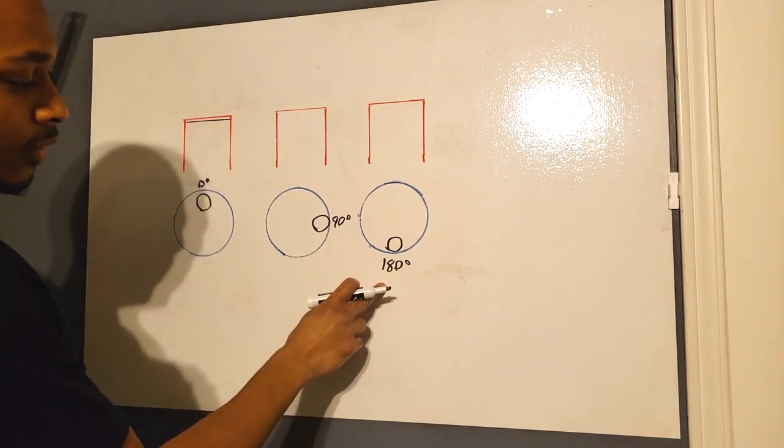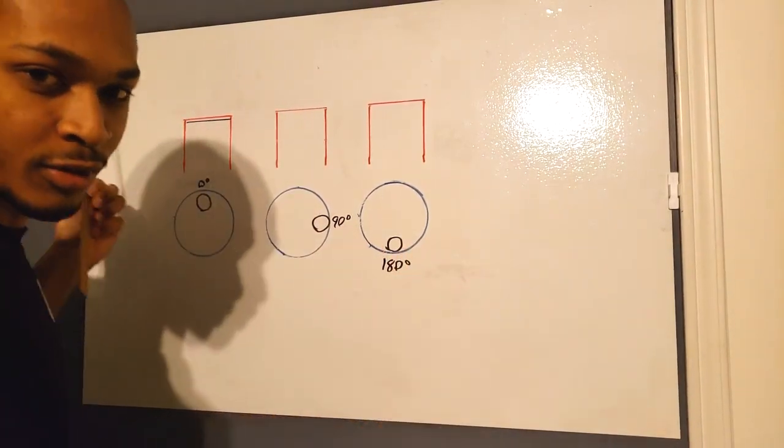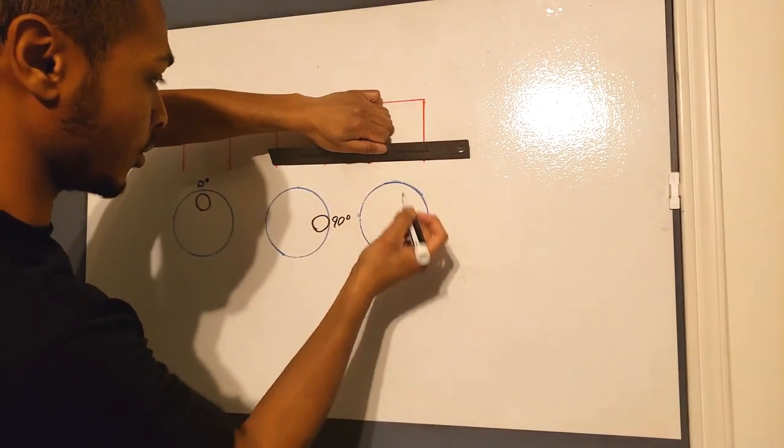And then when your crank is at the bottom of the stroke, well I just gave it away there, where's your piston? It's at the bottom of the stroke so it's at BDC.